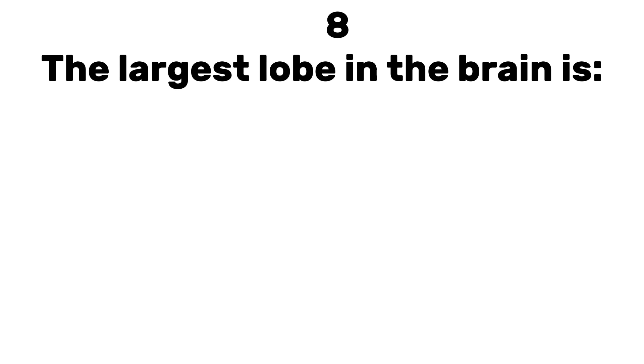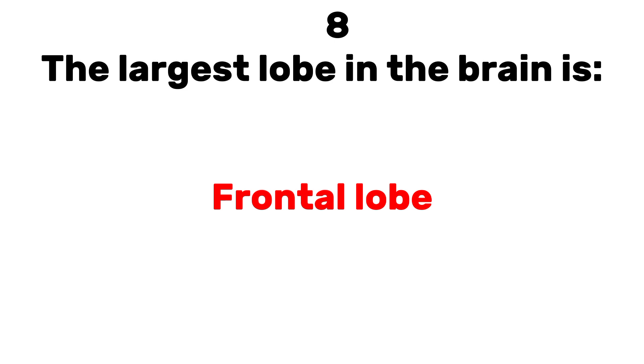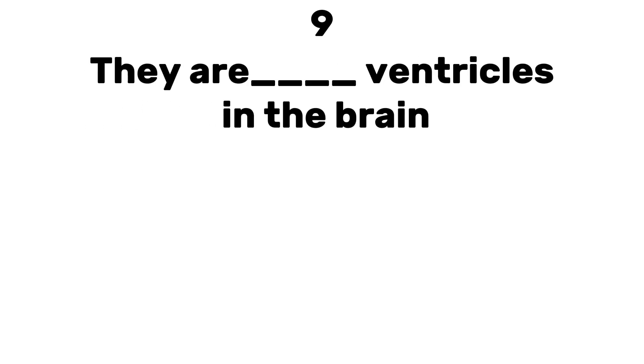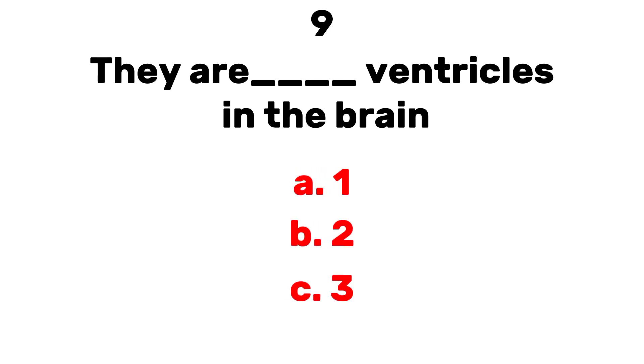Number eight: the largest lobe in the brain is dash. Answer: frontal lobe. Number nine: there are dash ventricles in the brain. A) one, B) two, C) three, D) four.